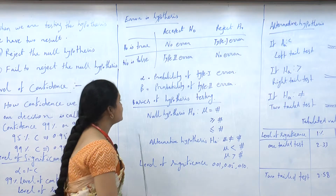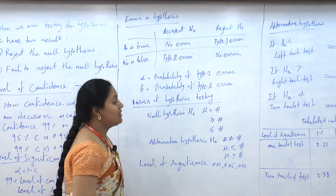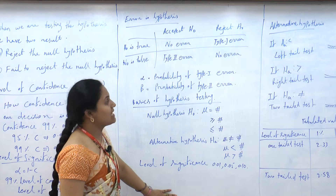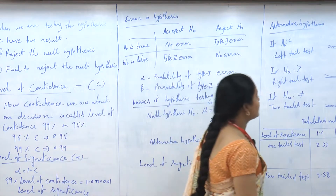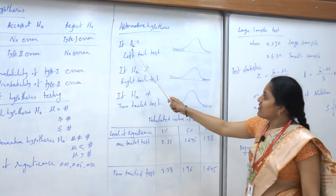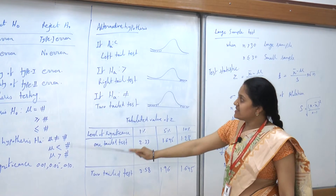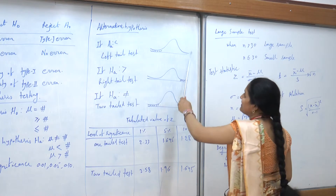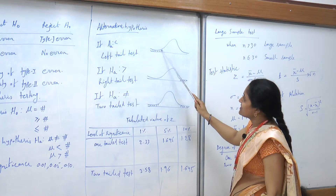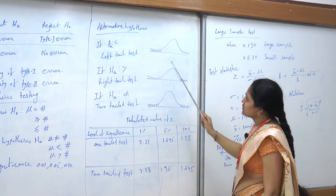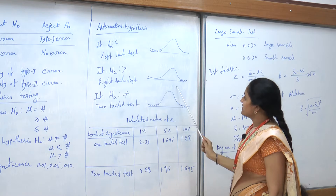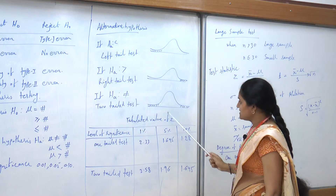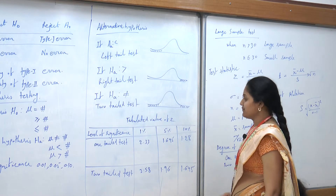In our hypothesis, how we prove something depends on the alternative hypothesis HA. If HA is less than, that is called a left-tail test. Looking at the normal bell curve diagram: less than gives a left tail, greater than gives a right tail, and not equal to gives a two-tail test — where both sides have a tail. The not-equal-to sign means our mean falls on either side.